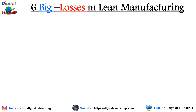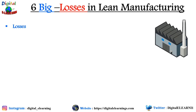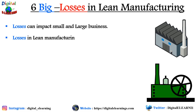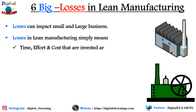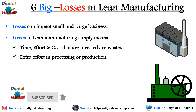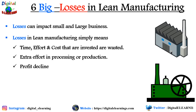The six big losses in lean manufacturing can impact small and large-scale businesses and usually arise during routine manufacturing processes. When these losses occur, it means the time, effort, and costs invested by the company are wasted — extra effort is required in processing or production of those goods. Profit declines, and employee morale declines because of these losses.